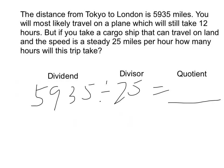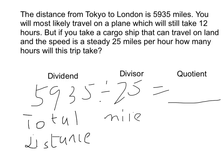Now I'll explain why this is a grouping situation by explaining the equation. The dividend here is 5935, which is the total distance, and the divisor is the size of each group — the size is 25 miles in each hour. The quotient will be the number of groups, or the number of hours, because that's the time it will take.